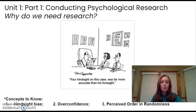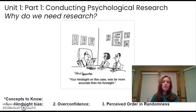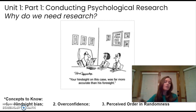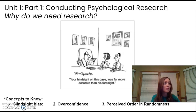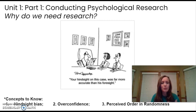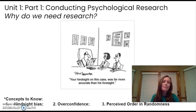...both groups will report 'of course I knew that finding would happen,' even when one result was obviously false. For example, if you tell one group 'separation weakens romantic attraction' and tell another group 'out of sight, out of mind,' most people on both sides will say 'of course that makes sense.' We tend to take information and fit it into our hindsight, thinking we could have predicted it when we probably couldn't have.